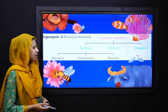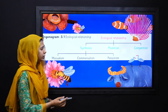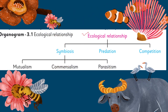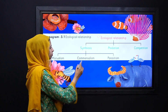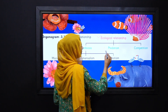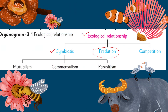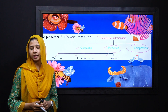Dear students, when we talk about ecological relationships, the three most important relations are: first, symbiosis; then predation; and then competition. Symbiosis is further divided into three parts: first is mutualism, then commensalism, and then parasitism. We will discuss all three one by one.